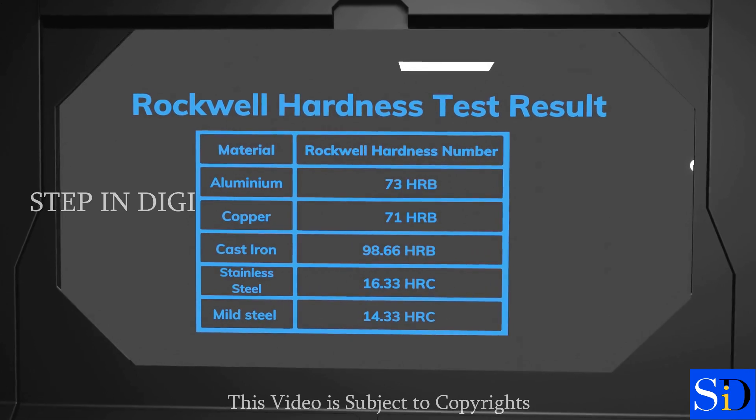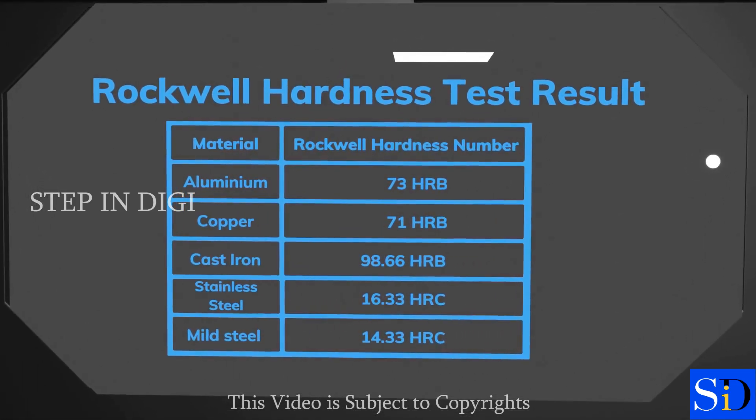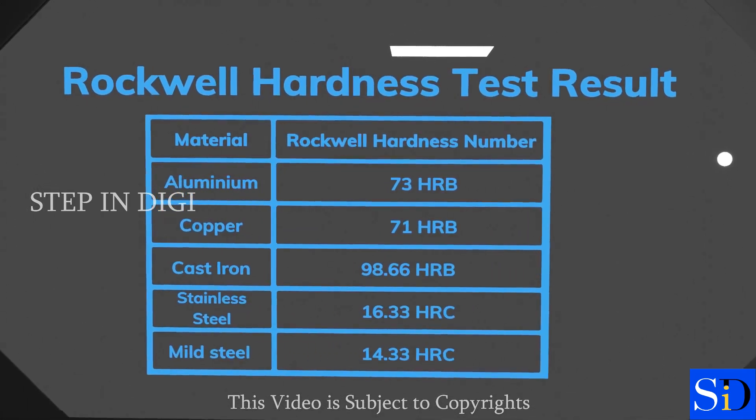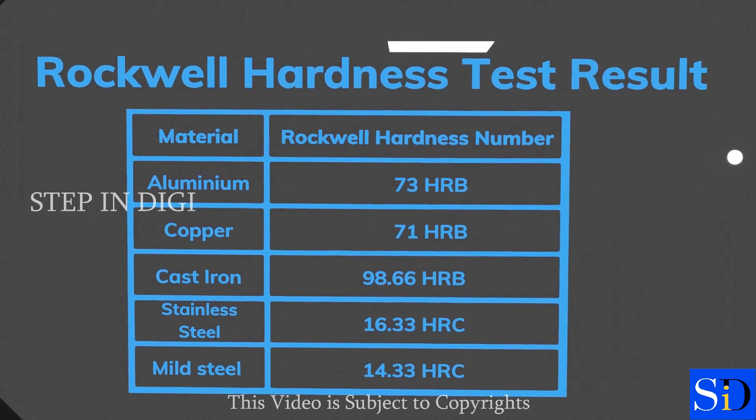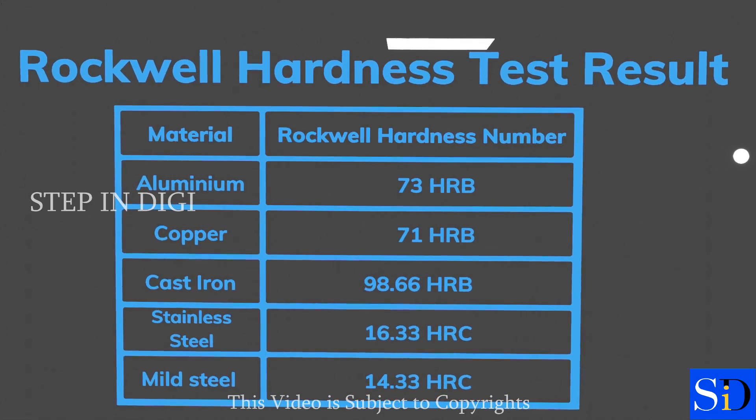From this table, we can conclude that on the B scale, cast iron is harder compared to copper and aluminium. And on the C scale, stainless steel is harder compared to mild steel.